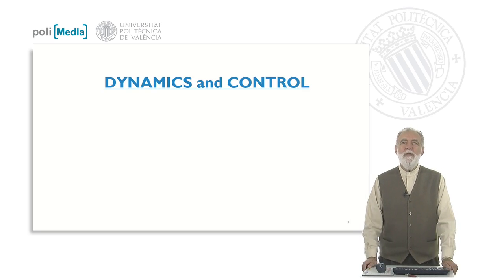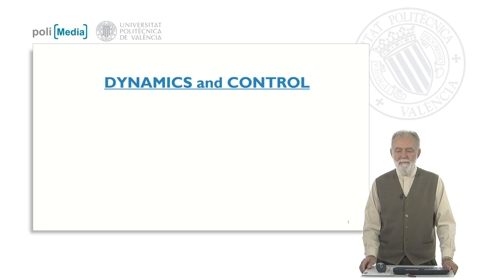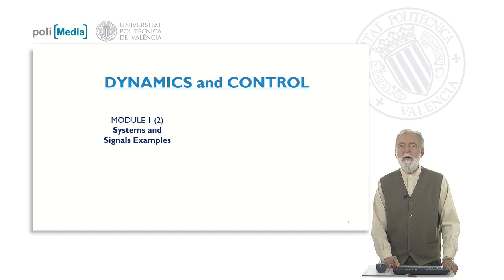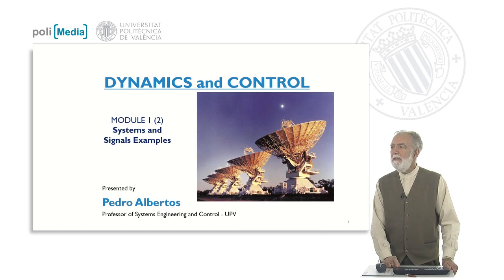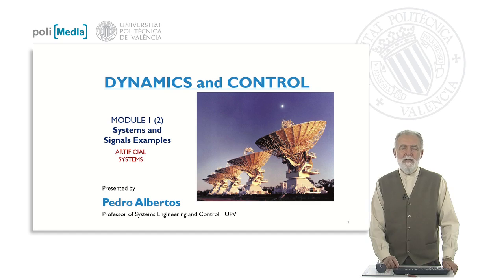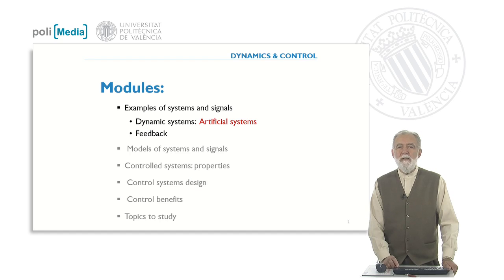Hello everybody, we are here for the course on dynamics and control, and in particular in module one: systems and signals examples. This course is presented by Pedro Albertos from the Polytechnical University of Valencia in Spain. Today we are going to present some examples of artificial systems. In this module number one on examples of systems and signals, we saw before systems in nature.